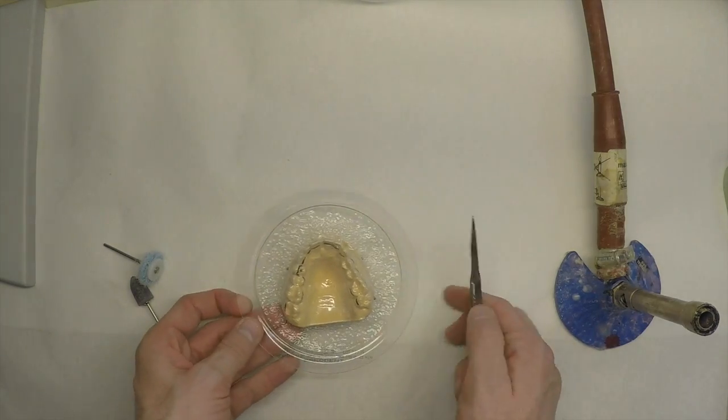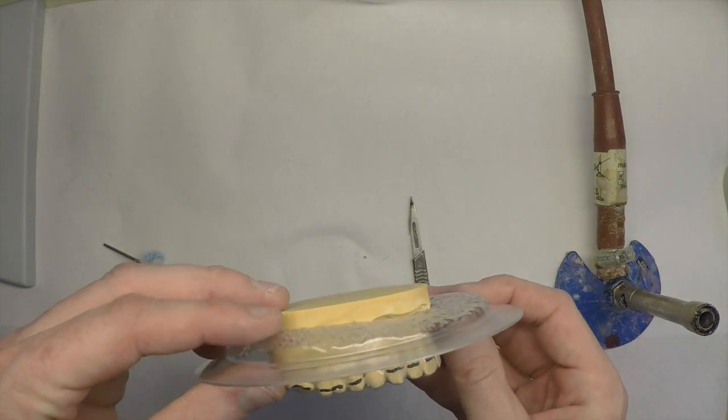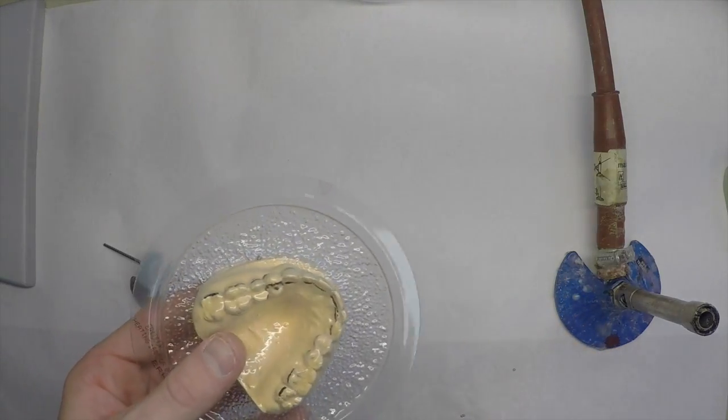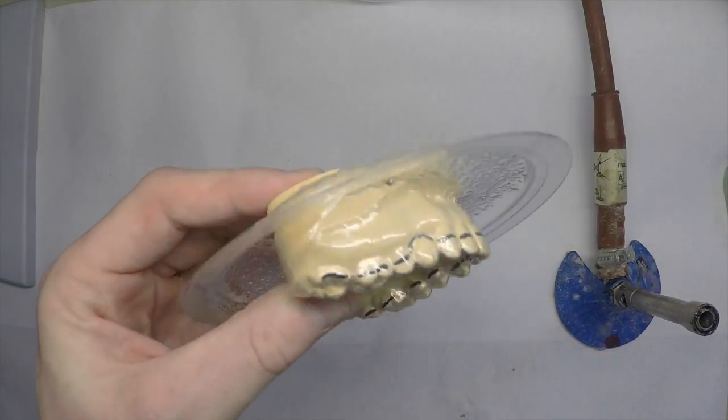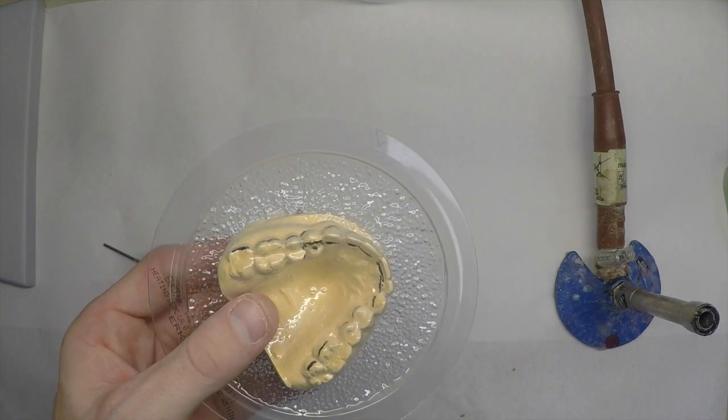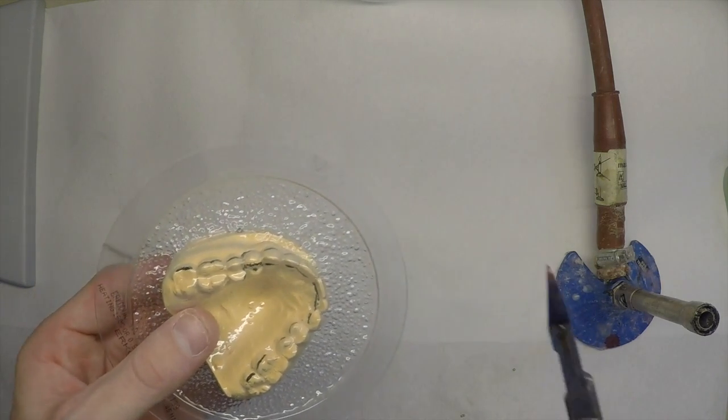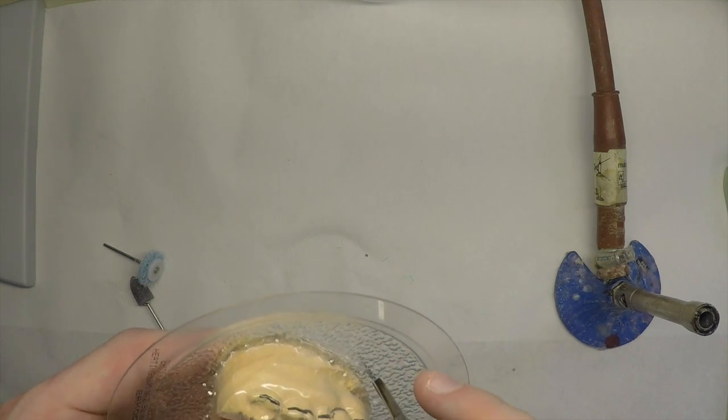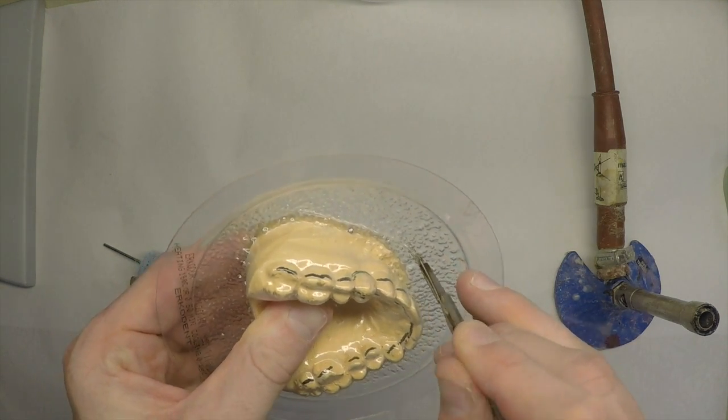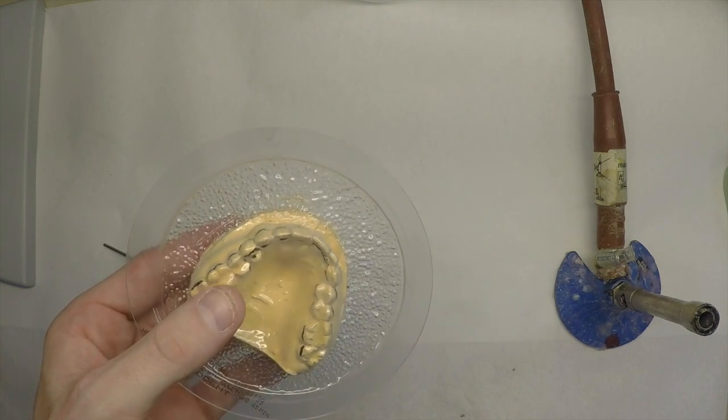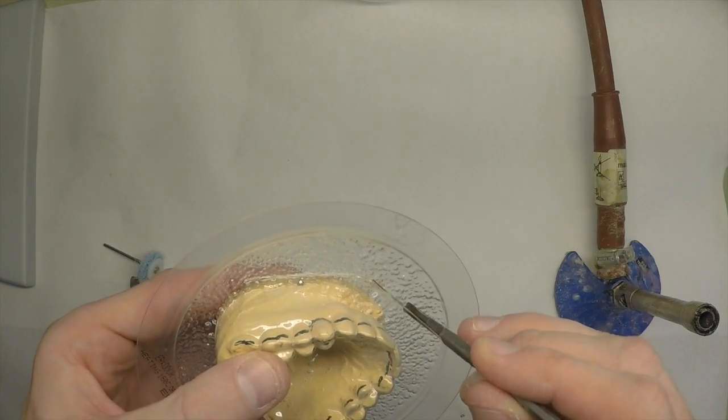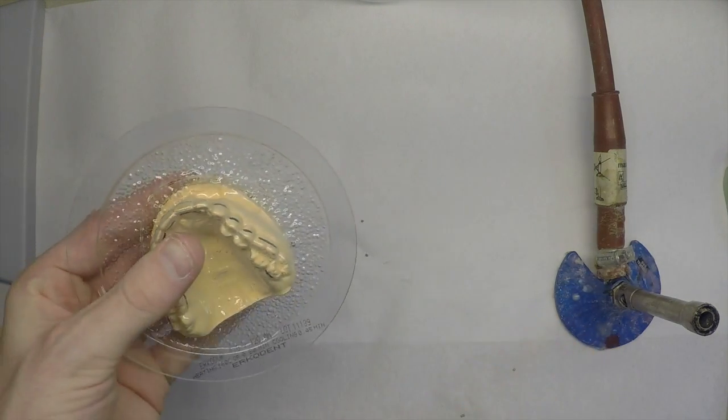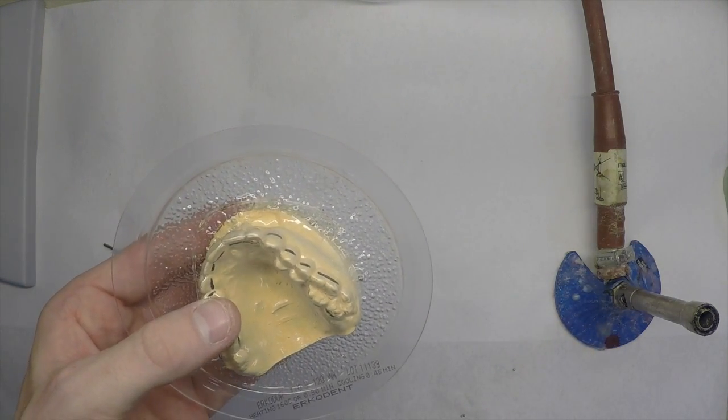Once we have our vacuum form pull down made, one millimetre, we want to just get rid of the excess. And we do this by heating a number 11 scalpel with a flame to remove the excess.